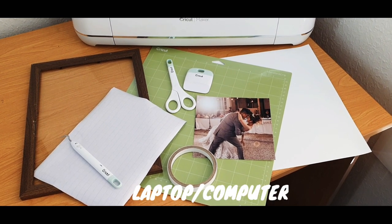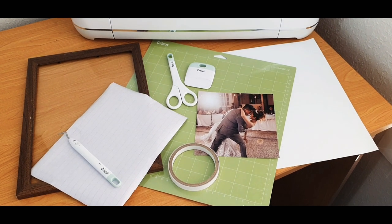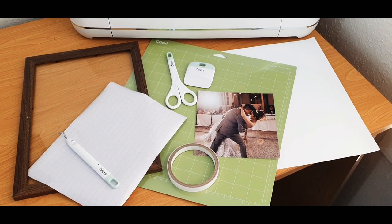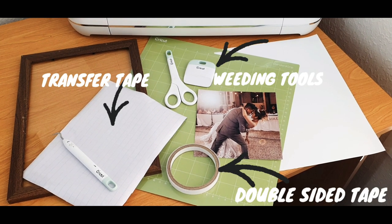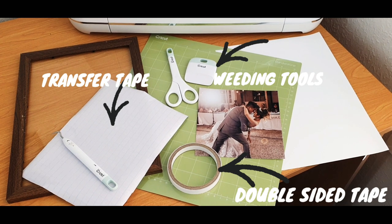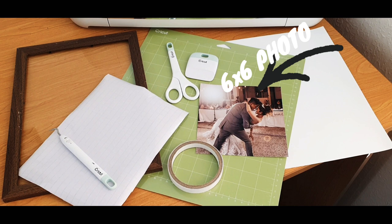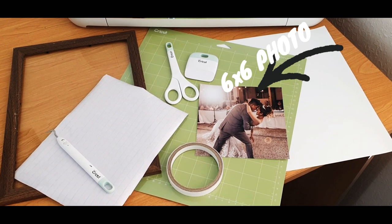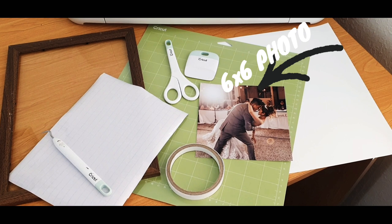Next is your laptop or computer for making the Spotify code and editing using the Design Space. Next is of course your weeding tools, transfer tape, and double-sided tape for the photo. And then next is your six by six photo—it will depend on you what size of photo you want but I like the six by six, it fits perfectly. And lastly your standard grip mat from Cricut.